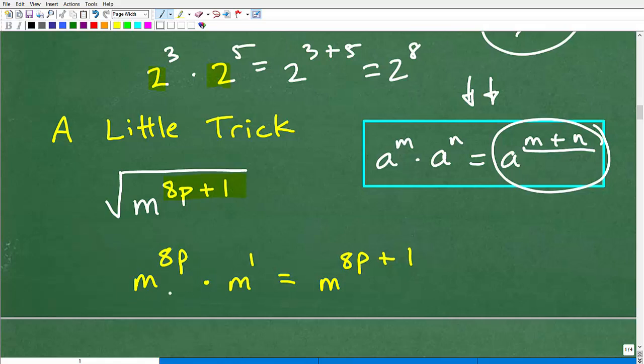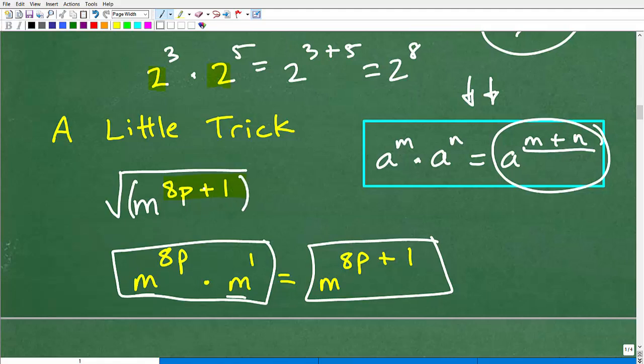Now, if this was the problem right here, if this was a multiplication problem, we would say, oh, this has the same base, so I would simply add the exponents. So that would be 8p plus 1. So m to the 8p plus 1 is the answer if this was the question, m to the 8p times m to the 1. So what does that mean? Well, instead of doing this problem right here, m to the 8p plus 1, which we currently have, we're going to exchange this out for this. It's going to make our life a lot easier. So let's go ahead and do that now.